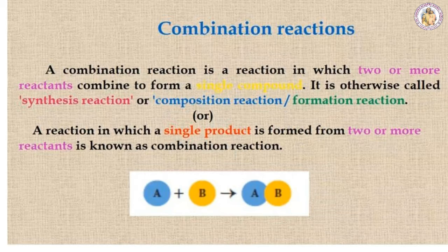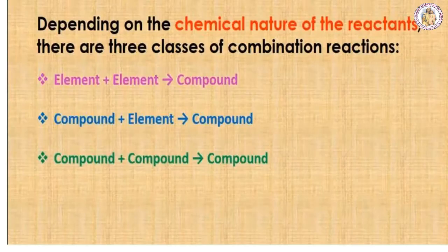Combination reaction: two or more reactants combine to form a compound. It is also called a synthesis reaction or composition reaction, where reactant A combines with B to form product AB. Only a single product is formed. Depending on the chemical nature of the reaction, combination reactions are classified into three types: element + element → compound; compound + element → compound; and compound + compound → compound.